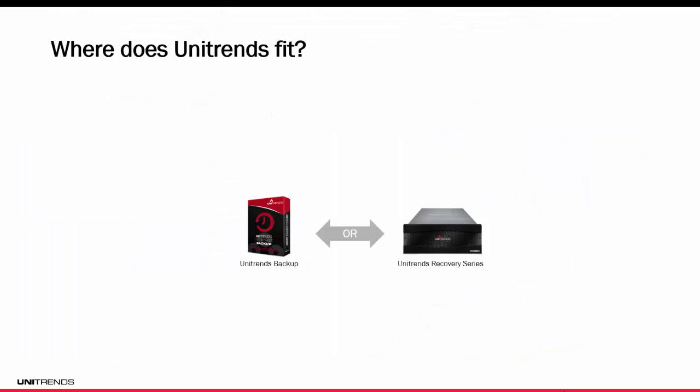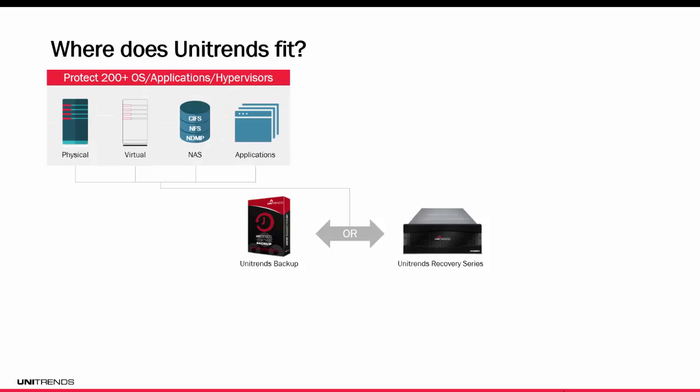Now let's look at where Unitrends fits in your environment. It begins by deploying the Unitrends backup software or a Unitrends Recovery Series appliance. From there, Unitrends is going to be protecting and backing up your environment. Unitrends can back up natively over 200 different operating systems — physical servers or file-level backups of virtual machines, snapshot-level protection of VMware, Hyper-V, and Citrix Xen server. Unitrends can also do file-level backups of CIFS, NFS, or NDMP backups on a NAS, or even back up at the application level natively: SQL, Exchange, Oracle, and SharePoint.